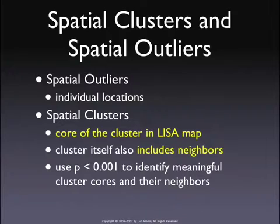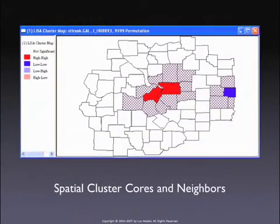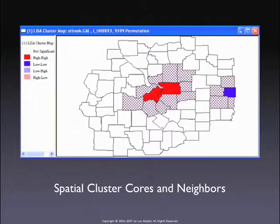For the clusters, it's not quite the same, because a cluster is a location that is similar to its neighbors. When we think of a cluster, we think of the whole thing, not just the core of the cluster. And the maps, as they are now, only show the core of the cluster. So if you have a high-high cluster here and a low-low cluster here, the actual cluster is more like the shaded shape.